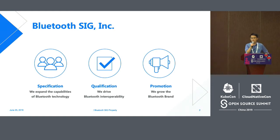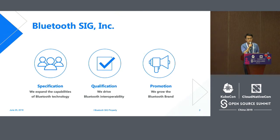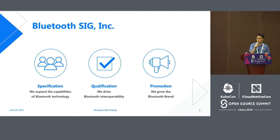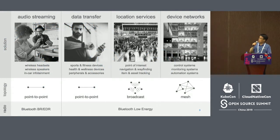The second, also very important task, is our qualification. Within our system and framework, if you use our Bluetooth logo, you need to be qualified. We have lots of verification policies to make sure connectivity can be guaranteed. The third part is promotion — and today I'm here, so this is also a kind of promotion. We participate in exhibitions, trade shows, and trainings for developers.